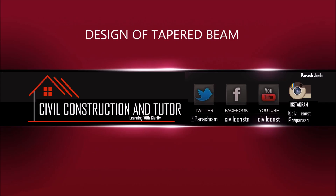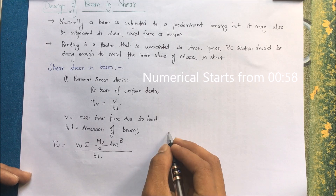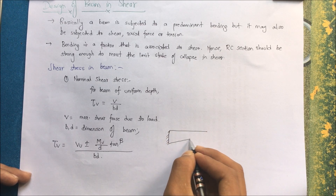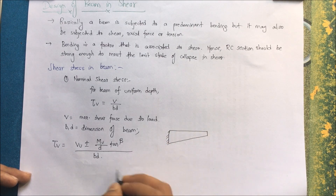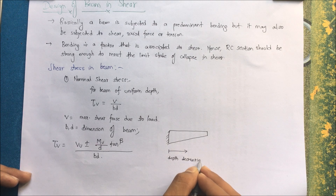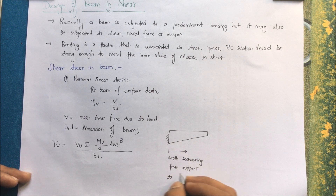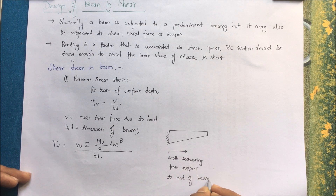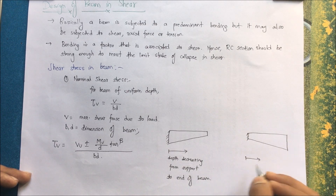Hello and welcome to my YouTube channel. In this video I will discuss the design of a beam in shear for a tapered beam. A tapered beam is a beam fixed at one end where, for a cantilever, the depth is decreasing from the support to the end of the beam, or it may be the opposite case where depth increases toward the free end.